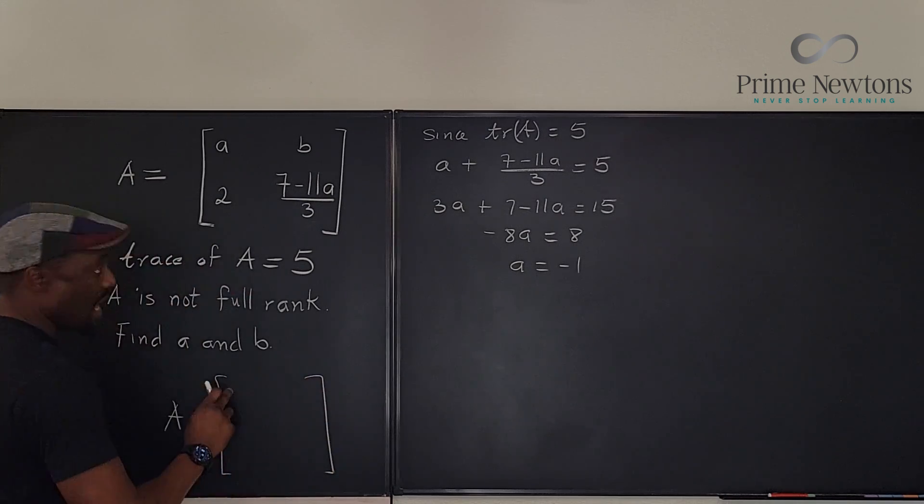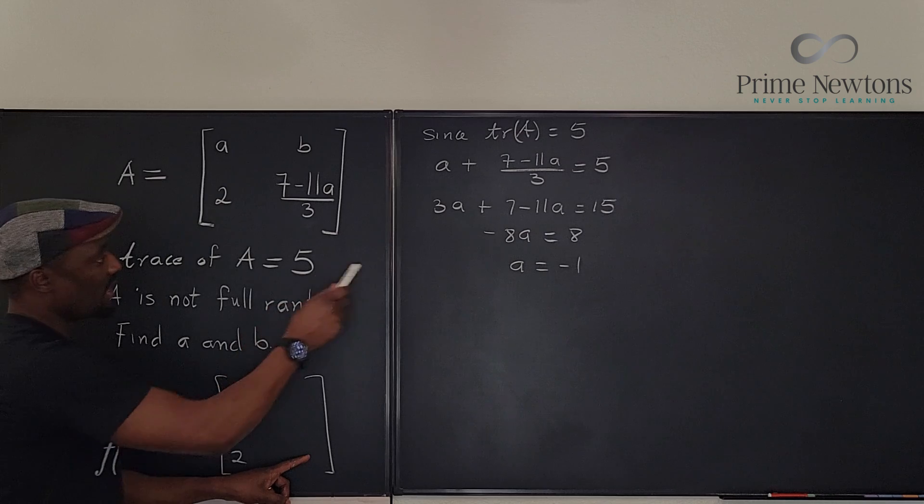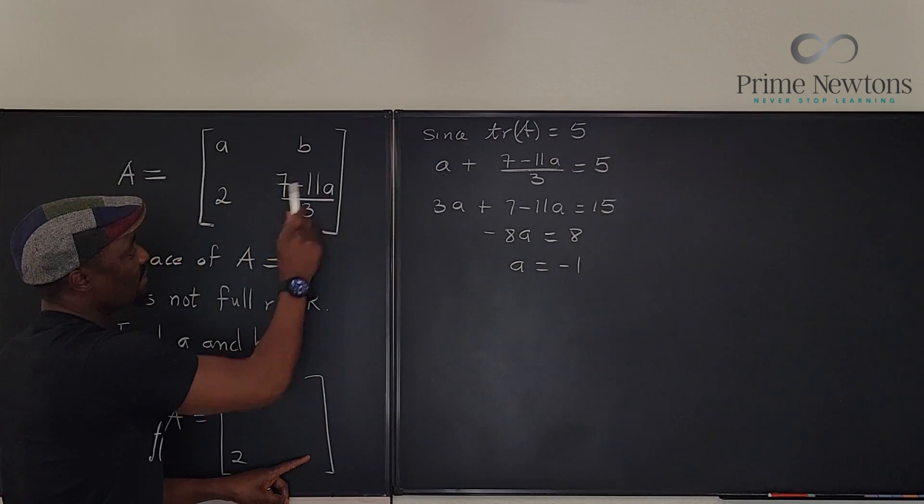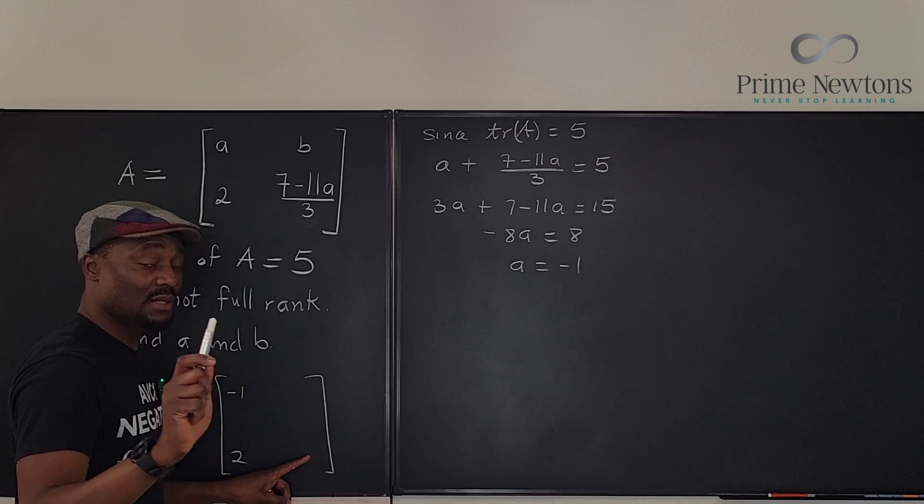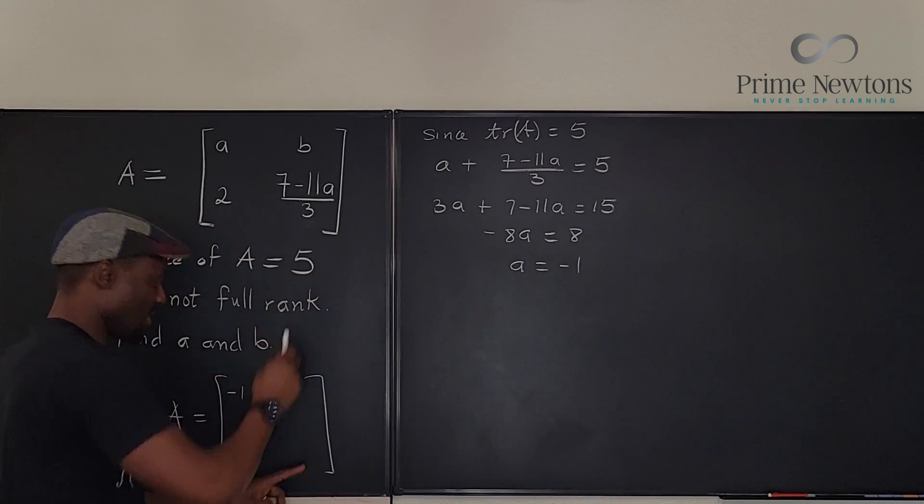We have a is minus one. This is two. What would this number be? If we plug in a to be minus one, we have seven minus 11 times minus one. That's going to be seven plus 11, which is 18 divided by three is going to be six.